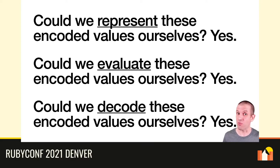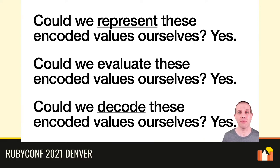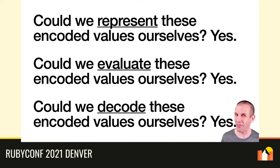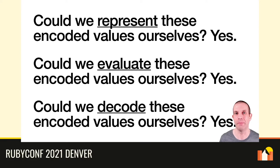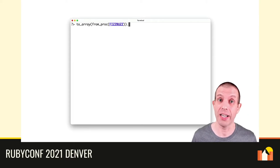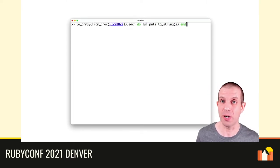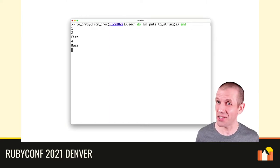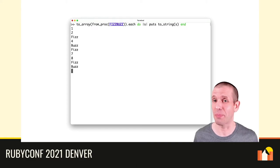Okay, we've asked: could we represent, evaluate, and decode these proc-encoded values ourselves instead of relying on Ruby's proc implementation to do the work for us? And thankfully the answer to all of these is yes. That's a cool result, and I want to believe it retroactively justifies the pain of programming with nothing in the first place. By limiting ourselves to writing programs in such a restricted subset of Ruby, we've created the opportunity to fully understand and implement that subset ourselves from scratch. To me it feels empowering to have that level of insight into and control over the actual machinery that's doing the computation, not just the programs we run on top of it.